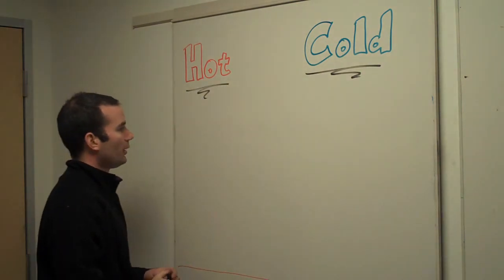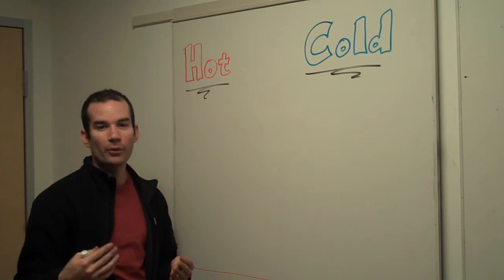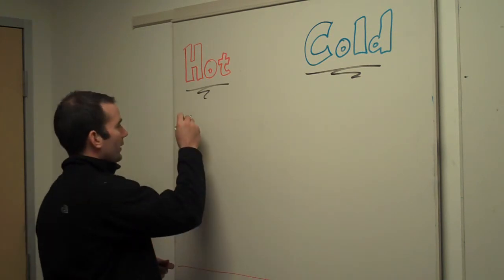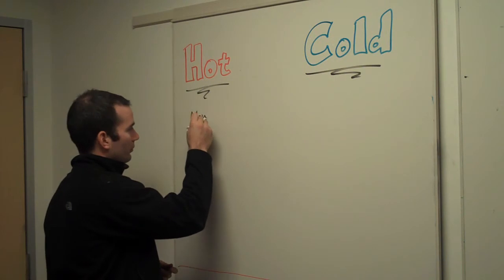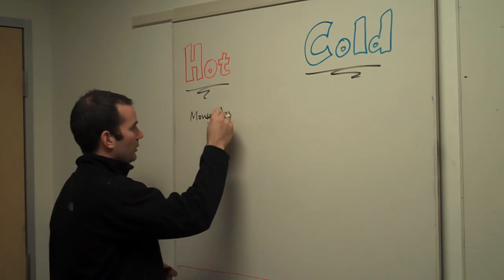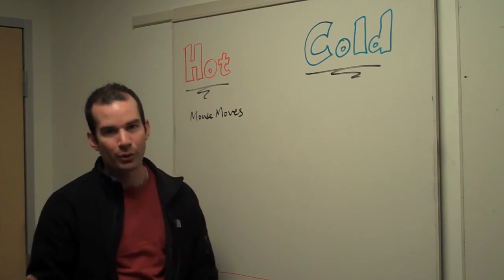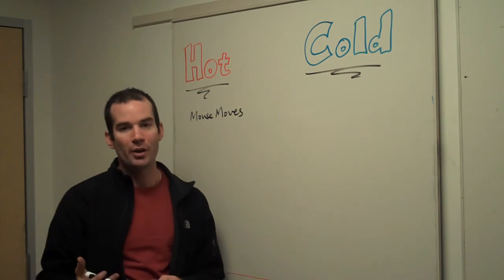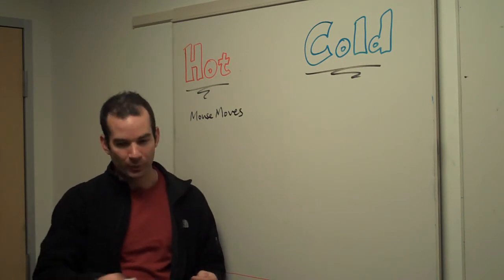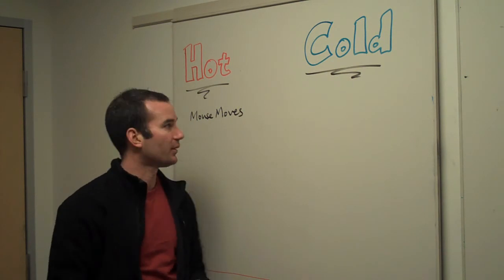A hot observable is one that kind of exists whether or not you're subscribed to it. A good example of this is mouse moves — these things are streaming in to the computer whether or not I'm subscribed to them. I move the mouse around; there are events happening independently of me observing it.